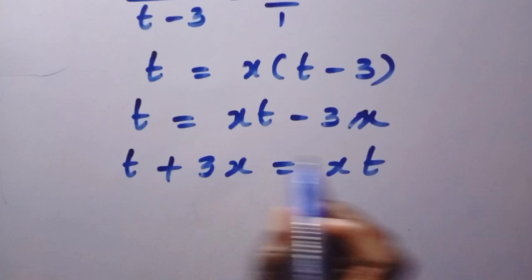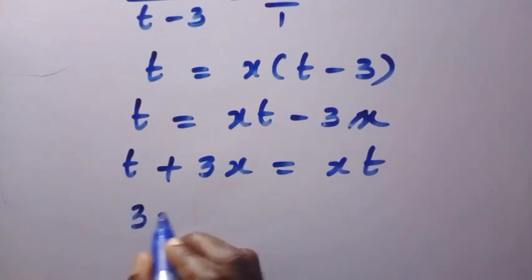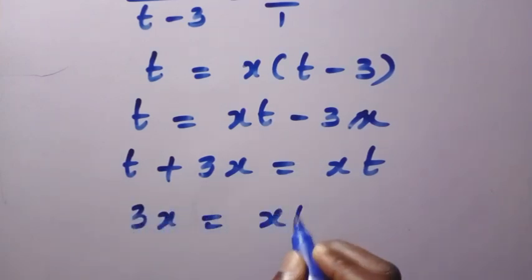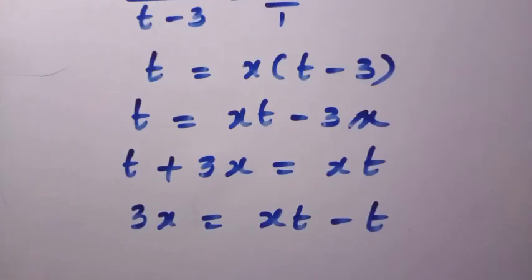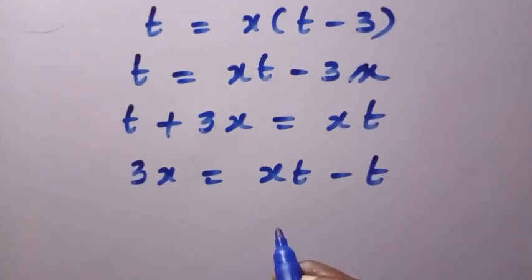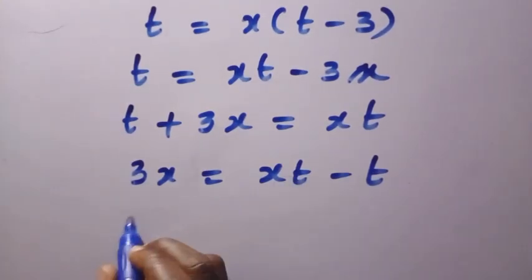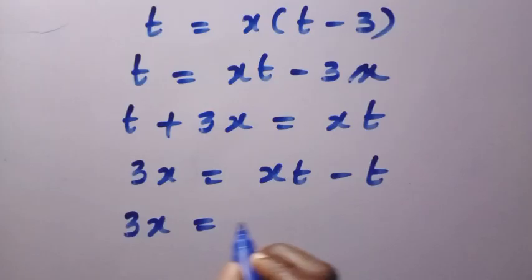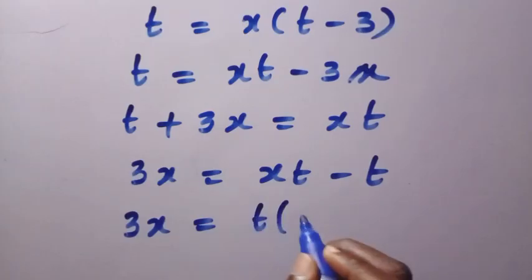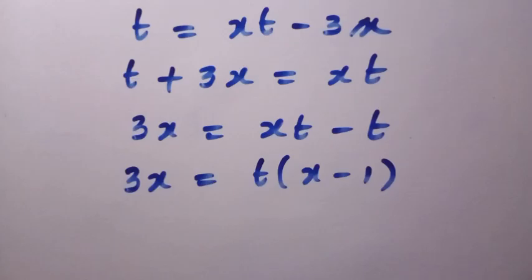And again, let's take this t to the other side. We have 3x equals xt minus t. Then we can factor out t from here. By factoring out t, we have t into bracket of x minus 1. Then we divide by x minus 1.